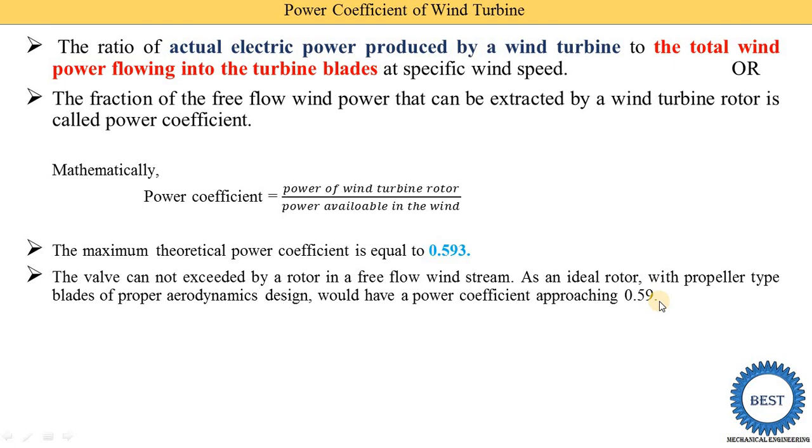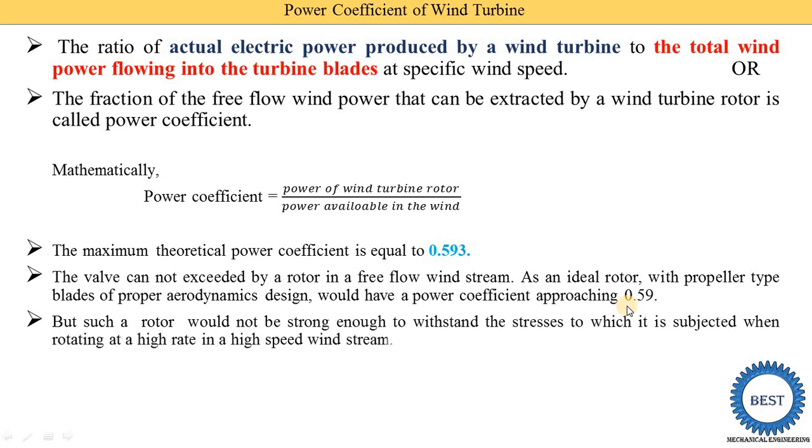Maximum efficiency achievable is 59 percentage or 0.59. But such a rotor will not be strong enough to withstand the stress to which it is subjected when rotating at the high rate in a high speed wind stream means suppose we are designs the wind turbine for efficiency of 0.59.